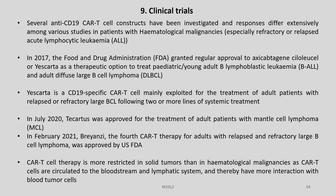Status of clinical trials: Several anti-CD19 CAR T-cell constructs have been investigated and responses differ extensively among various studies in patients with hematological malignancies, especially refractory or relapsed acute lymphocytic leukemia. In 2017, the FDA granted regular approval of axicabtagene ciloleucel (Yescarta) as a therapeutic option to treat pediatric/young adult B-cell lymphoblastic leukemia and adult diffuse large B-cell lymphoma. Yescarta is a CD19-specific CAR T-cell mainly used for treatment of adult patients with relapsed or refractory large B-cell lymphoma following two or more lines of systemic treatment.